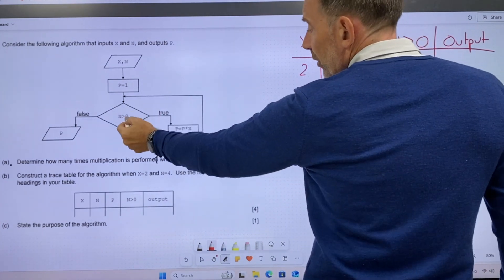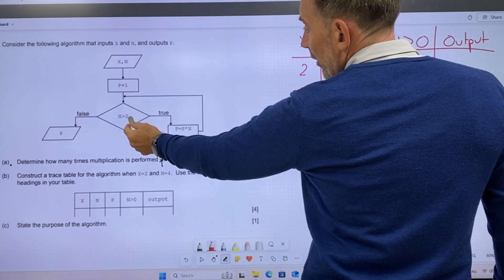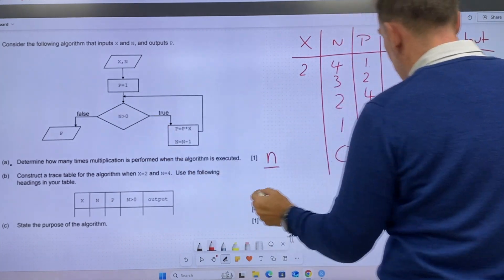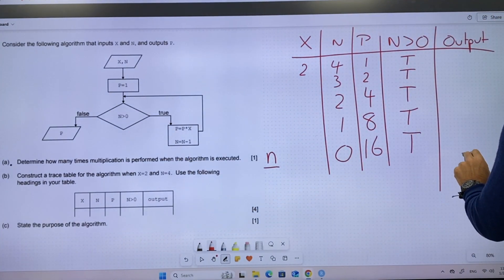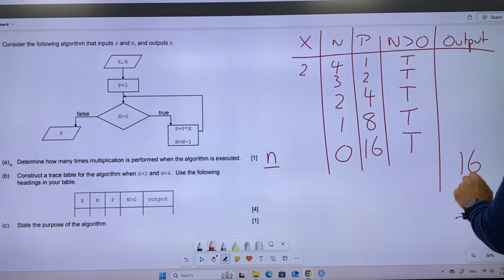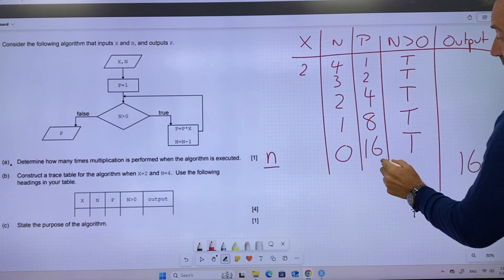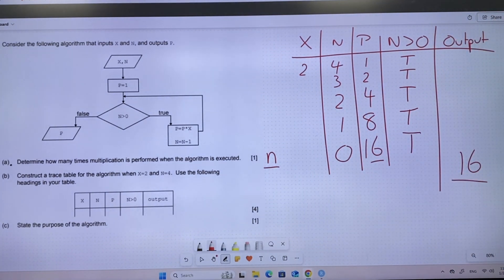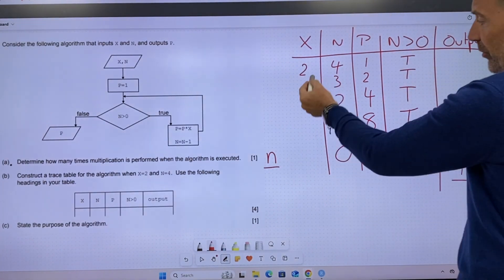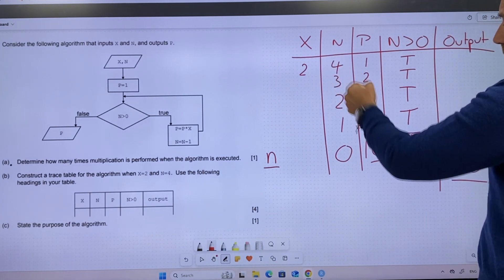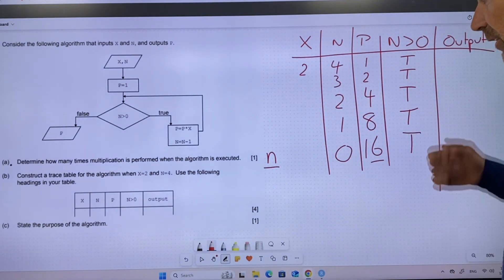So now we go back around. Is n greater than zero? No, it's not. N equals zero. So we're going to print out. Down here. Output 16. Output p, whatever the value of 16 is. So that is basically what's going to happen there. So I could put two's in here. I don't need to.